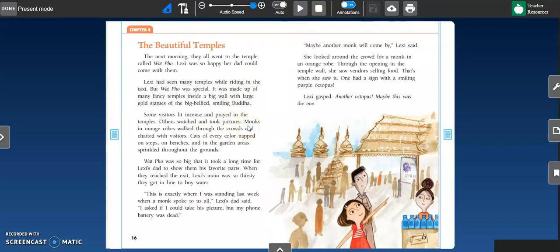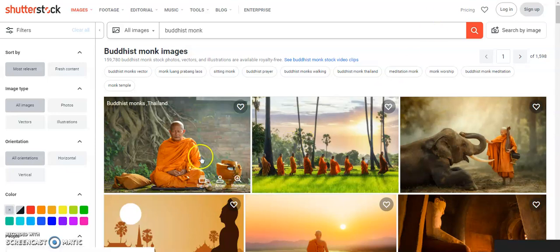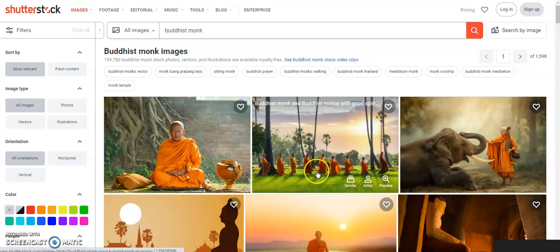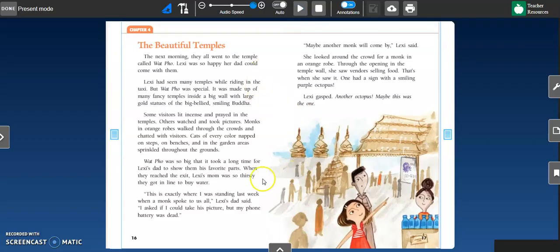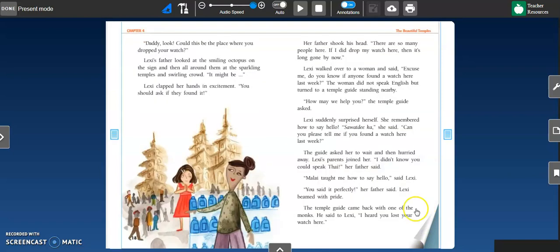The other vocabulary word that I wanted to talk about in the story is a monk. So, right here it says in the temple that monks in orange robes walked through the crowds and chatted with visitors. So, a monk is someone who lives or stays within the temple and talks to visitors and maybe prays with them. So, just to kind of paint a better picture of where Lexi is with her family. Then, in the temple, with all of these cats, napping throughout the place, Lexi gasped. Another octopus! Maybe this was the one. The one what? What does she think she might find by the octopus? Let's read to find out.